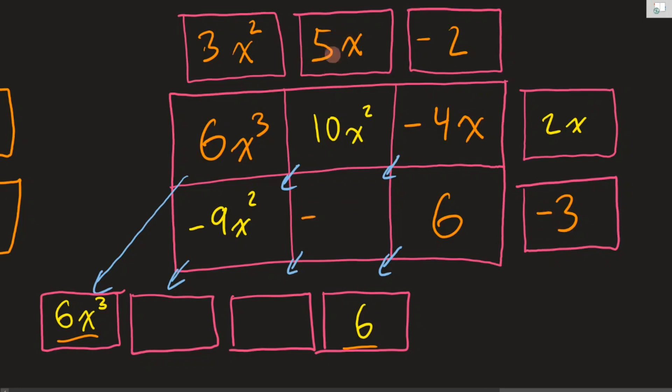And last but not least, let's combine along our diagonals. Negative 4x and negative 15x gives us negative 19x. And positive 10x and negative 9x gives us positive x squared. So there you have it. That is polynomial Sudoku.